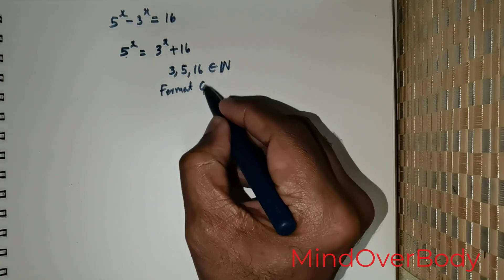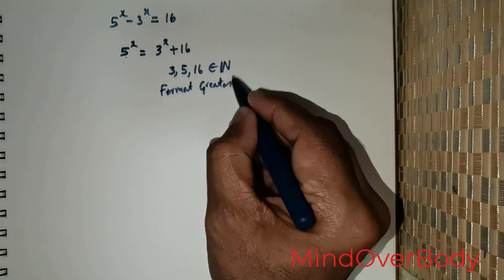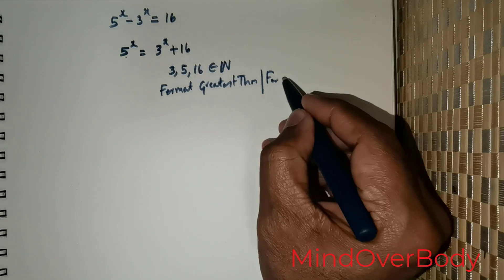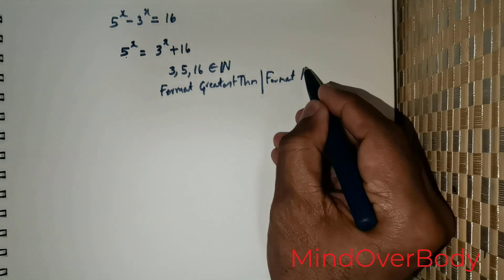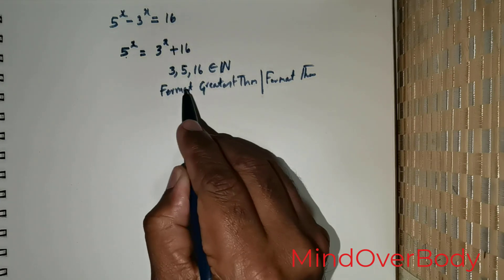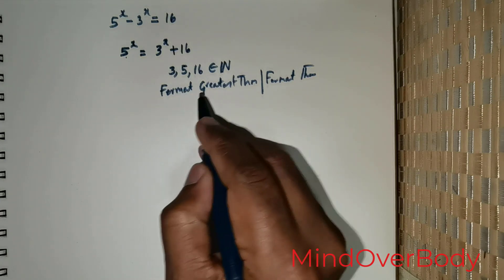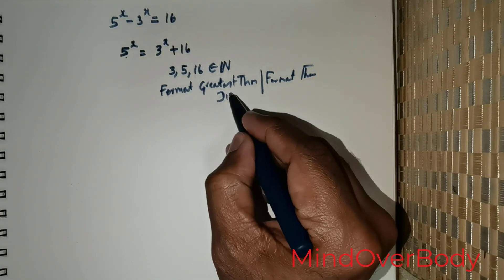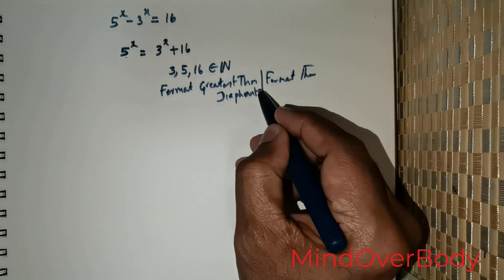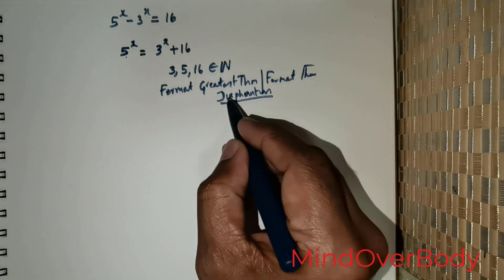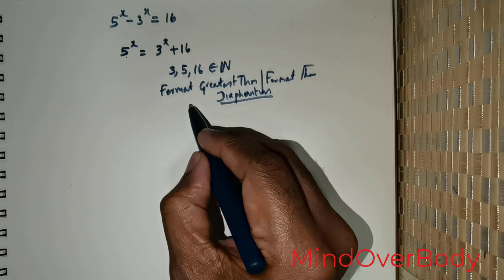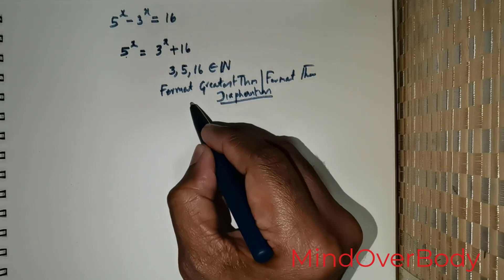Fermat's Last Theorem, or it is also known as Fermat's Greatest Theorem. Of course, the theorem was not stated by Fermat; the theorem was stated by Diophantus centuries ago. However, Fermat was the one who had claimed to have solved the theorem.